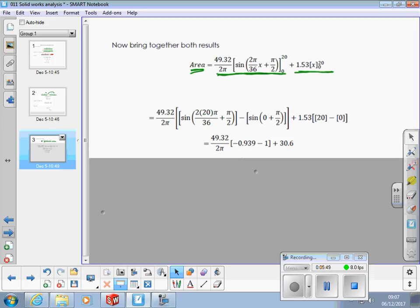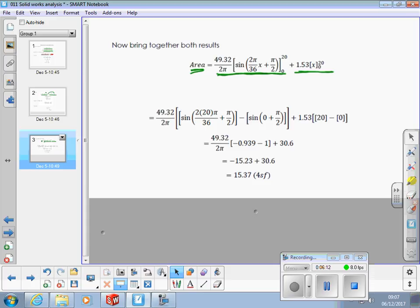We put the limits in. So, between 20 and 0. All of that part is multiplied by 49.32 over 2 pi, and all of this part is multiplied by 1.53 and we stuff those numbers in the calculator we get 15.37 which is around the same value as we got using the other methods, Simpson's rule, using the software and so on.